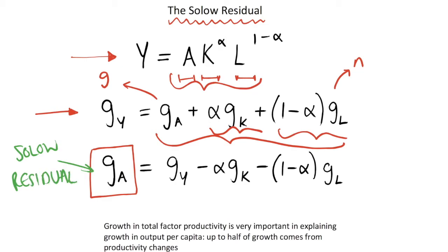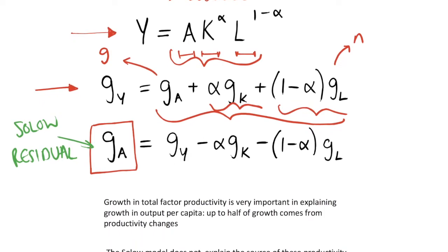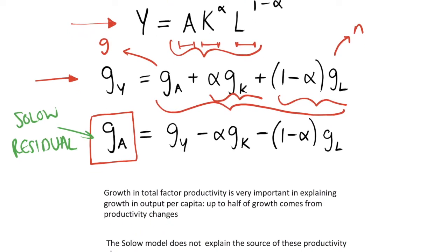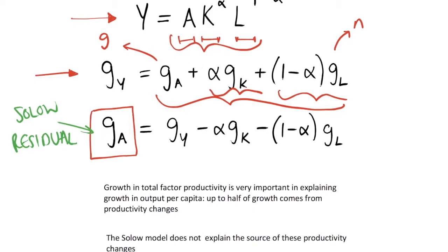The reason we've rearranged such that we have the Solow residual on its own on the left hand side is because this can really show us what we actually mean. The Solow residual is the growth in our output that cannot be explained by increasing our primary factors of production.